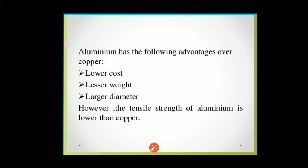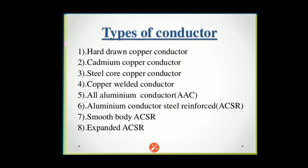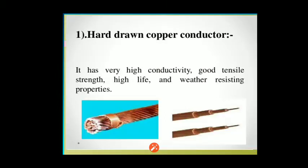Next, we will discuss the types of conductors. There are mainly eight types: first, hard-drawn copper conductor; second, cadmium copper conductor; third, steel core copper conductor; fourth, copper welded conductor; fifth, all aluminium conductor; sixth, ACSR (aluminium conductor steel reinforced); seventh, smooth body ACSR conductor; and eighth, expanded ACSR conductor. We will discuss each one in detail.